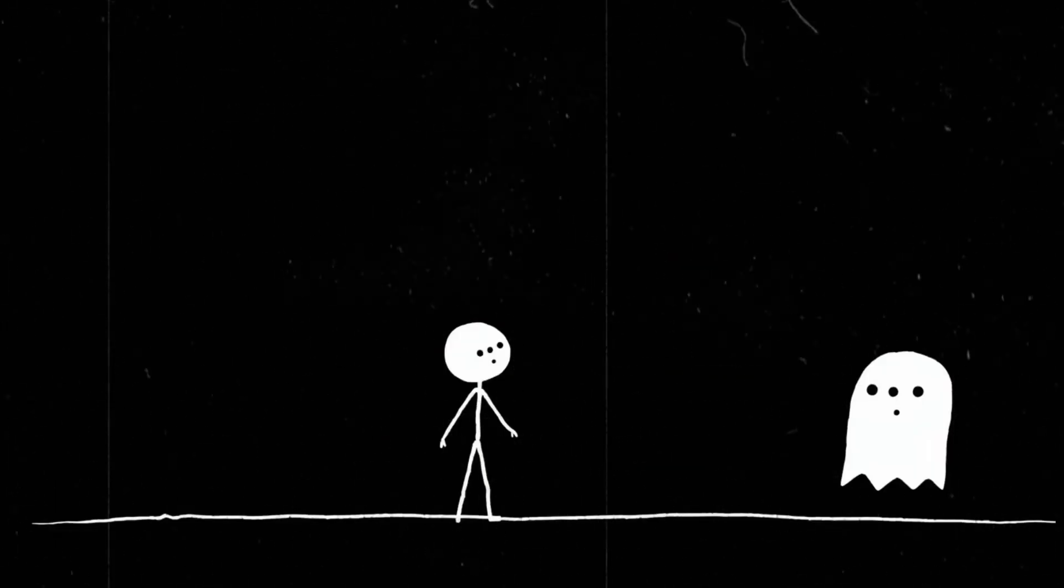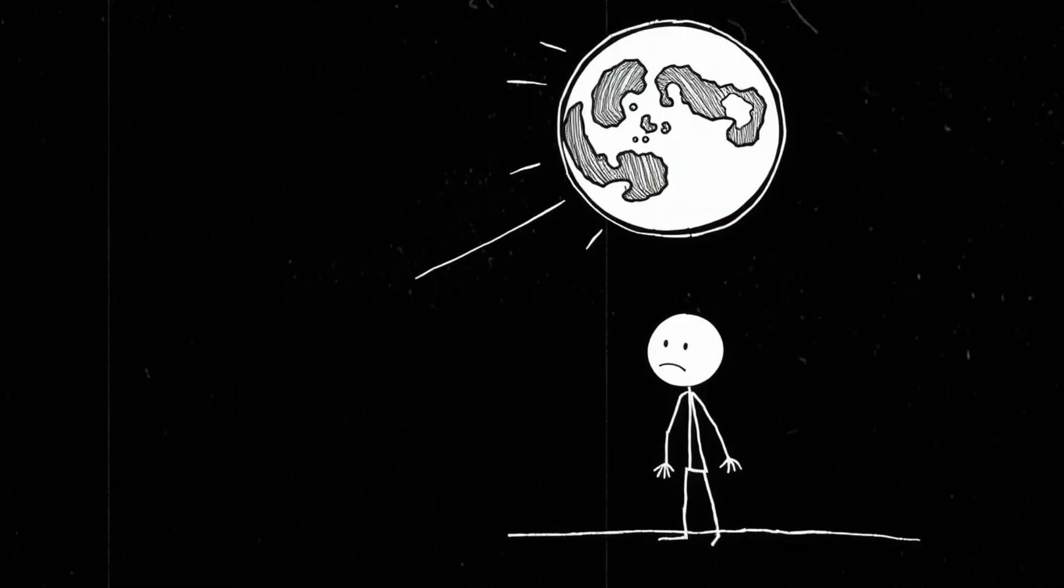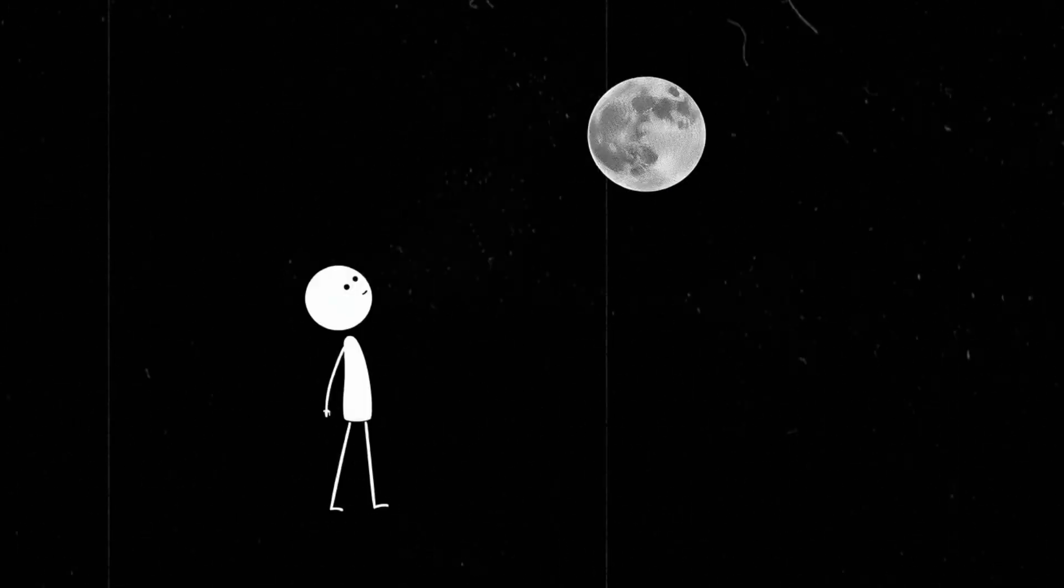And then there's the big question. What if the second moon didn't last? Maybe it crashed into Earth millions of years ago, changing everything, shifting our continents, wiping out early species. Or maybe it slowly drifted away, leaving behind only a weird gravitational scar in our history.